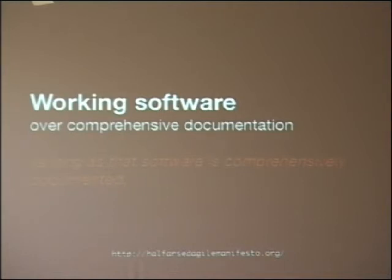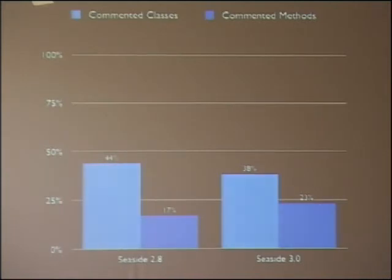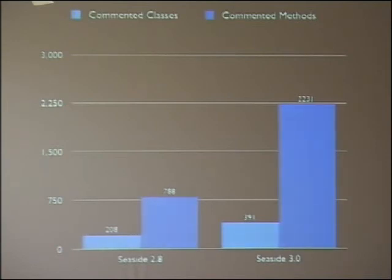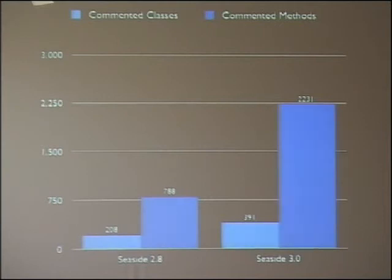Working software over comprehensive documentation — that's this part of the Agile manifesto. But the problem is that in an open source project, people really need documentation. We have worked a lot on commenting Seaside, especially in the context of 3.0. If you look at the numbers, the lighter column is Seaside — here is classes and methods for Seaside 2.8, and this is classes and methods for 3.0. It looks like there are fewer comments, but if you look at absolute numbers it's actually much better: there are many more classes commented, all the public interfaces are commented. We've worked a lot on that.